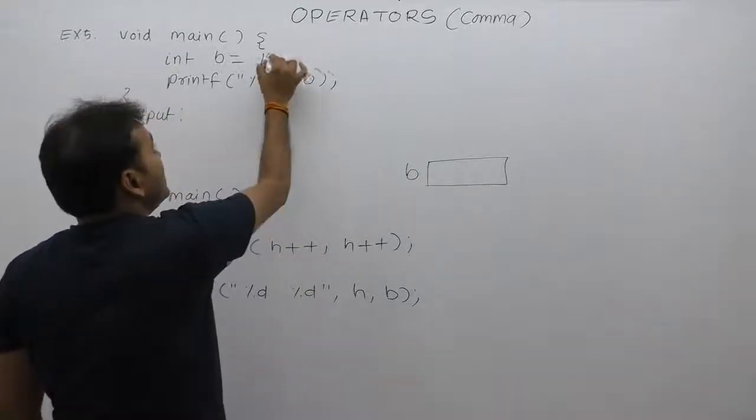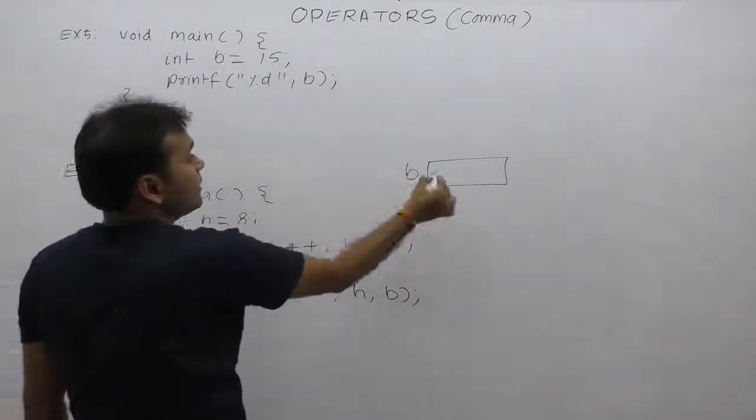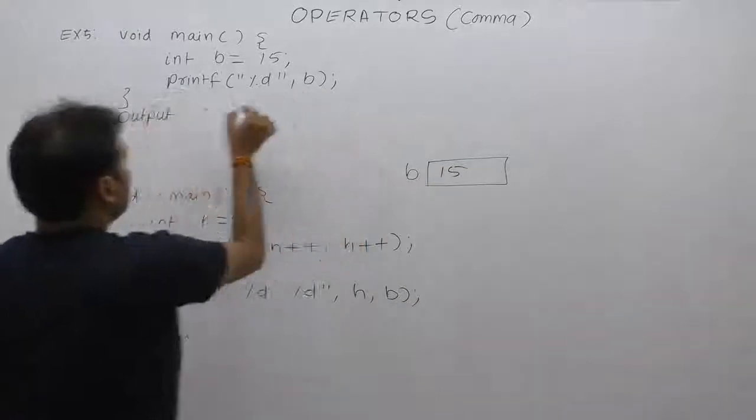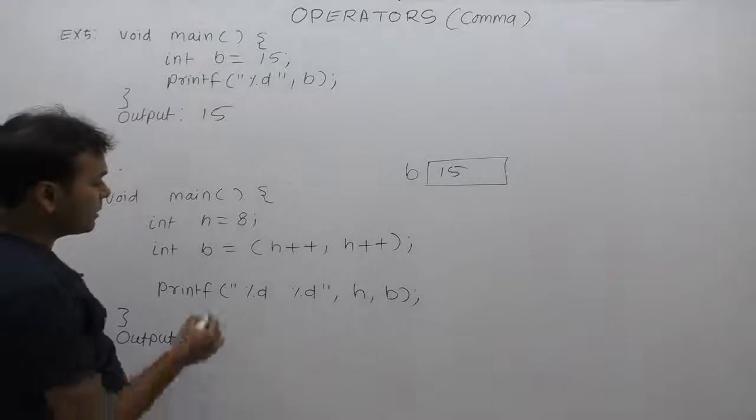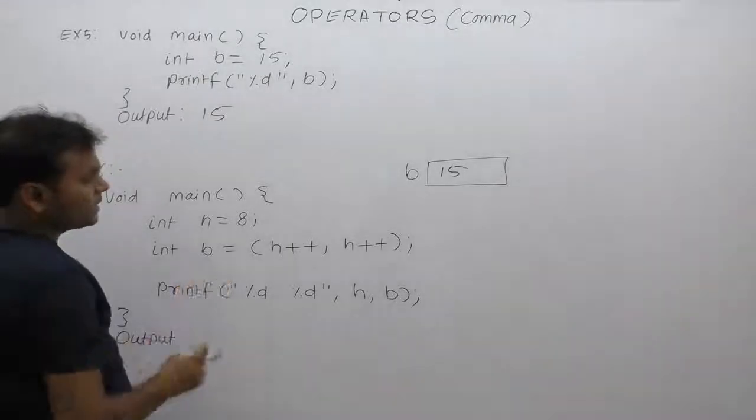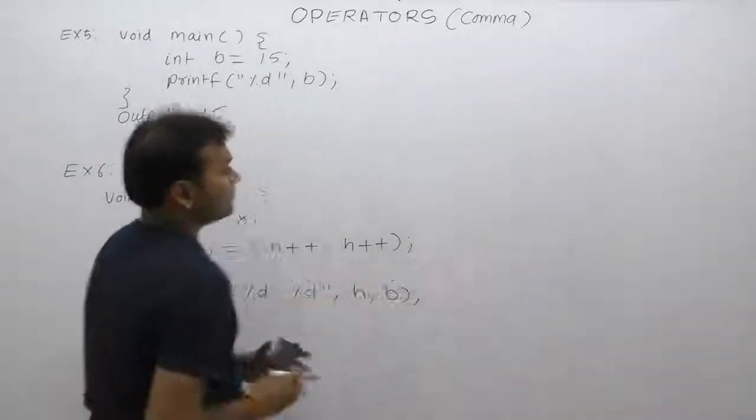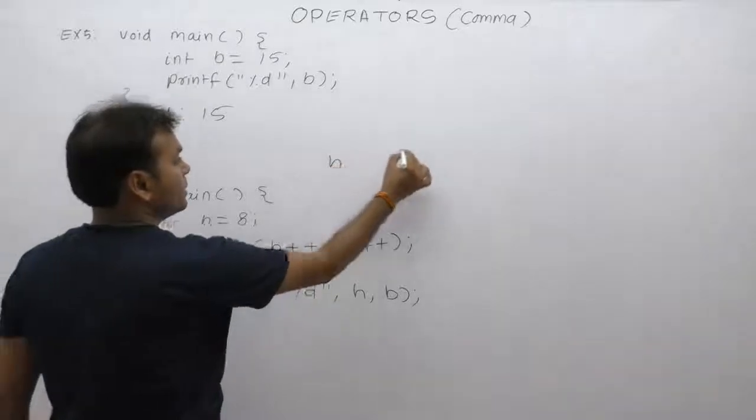Now fifteen is assigned to the variable b. Therefore, the value printed is fifteen. Next example, Example 6: in that case, we are declaring two variables, h and b.